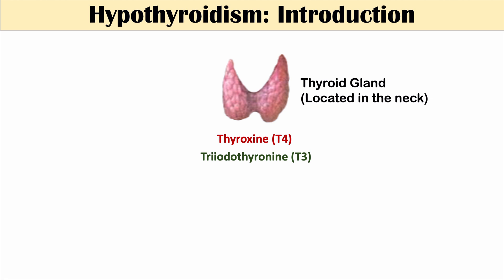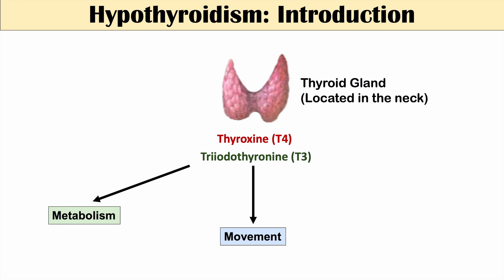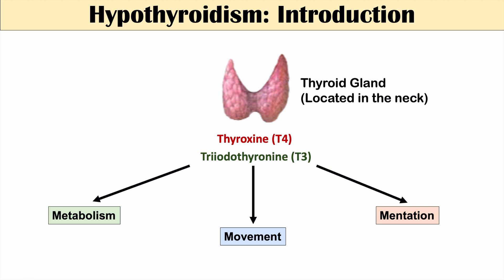The roles these two thyroid hormones play include metabolism, movement, and mentation. I use these specific words because they help us remember what the thyroid hormones do — the three Ms. Thyroid hormones increase metabolism, increase movement, and increase mentation or thought processing. So if we have low levels of thyroid hormones as in hypothyroidism, we're going to have low metabolism, low movement, and low mentation.